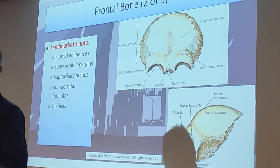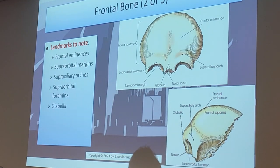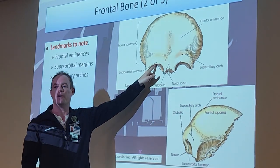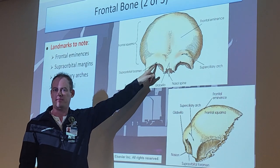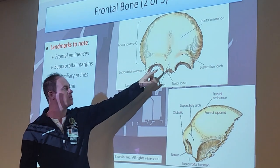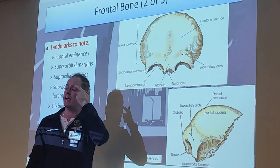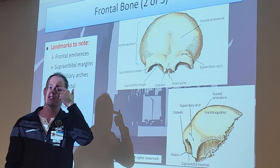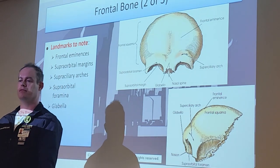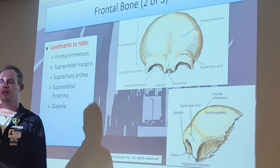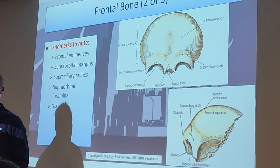Then we have the supraorbital foramina - there are two little holes, one left and one right. They're not actually on this model, but if you look on the picture there are two little foramina for vessels right above your orbits. Sometimes you can feel that little foramen - it's just an area for vessels to travel.